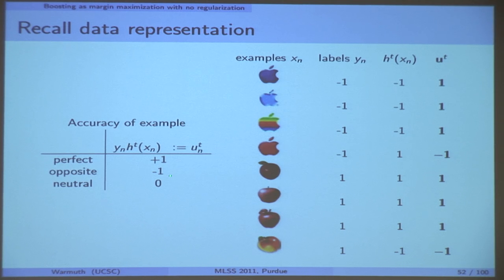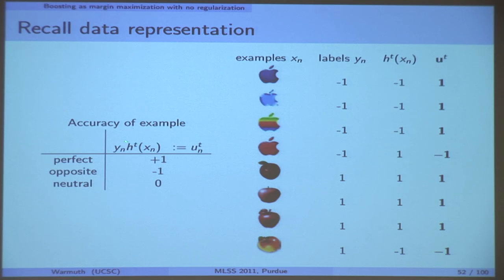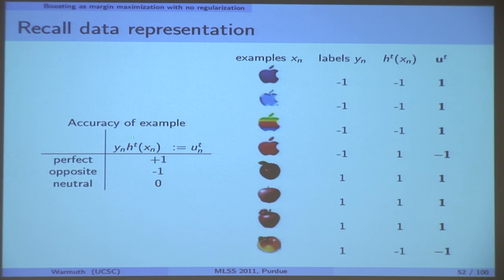What does this U mean? It measures the accuracy of a particular example. Perfect means these two agree — you have plus one. Opposite is minus one, and you also let H be between zero and one, which would give you a neutral accuracy.